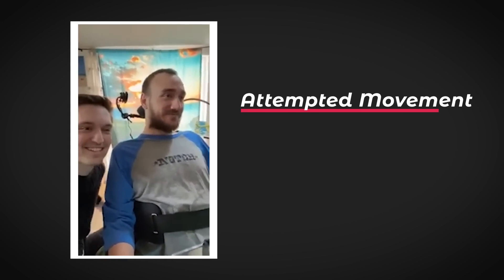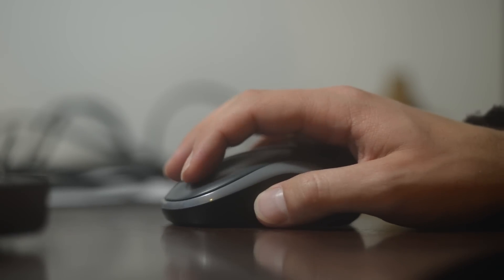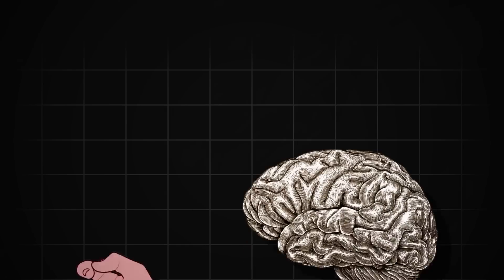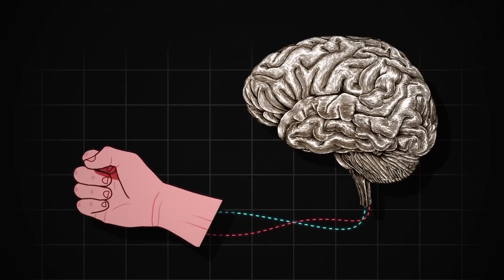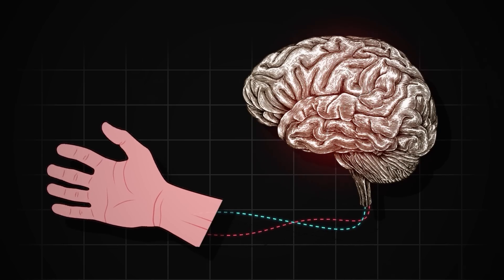There were two approaches that Nolan worked on with the team: attempted movement versus imagined movement. Attempted movement was focused on trying to move his hand to move the mouse, the way that he would have done before he was injured. The idea being that even though his spine is broken, the neural pathways associated with movement are still intact and can be used as triggers for device control.